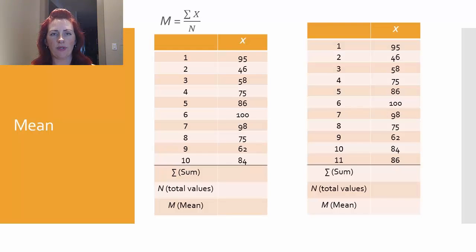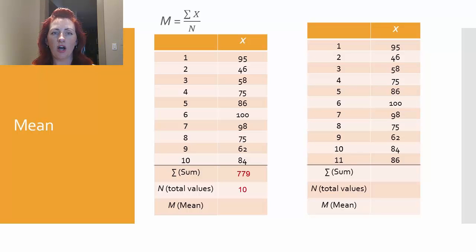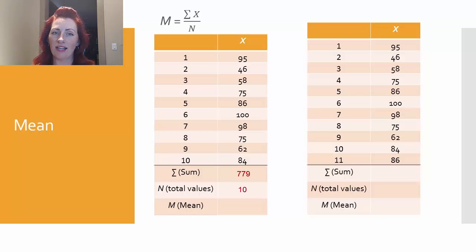Now let's look at a couple of examples. You can see with this first data set that I have ten numbers listed — let's refer to these as ten test scores. We want to calculate the average. The first thing we need to do is sum all of those values; the sum comes out to be 779. Next, we need to determine what n is, or the total number of values, which for this example is 10. So to calculate the mean, we take that sum and divide by n: 779 divided by 10 gives us 77.9.